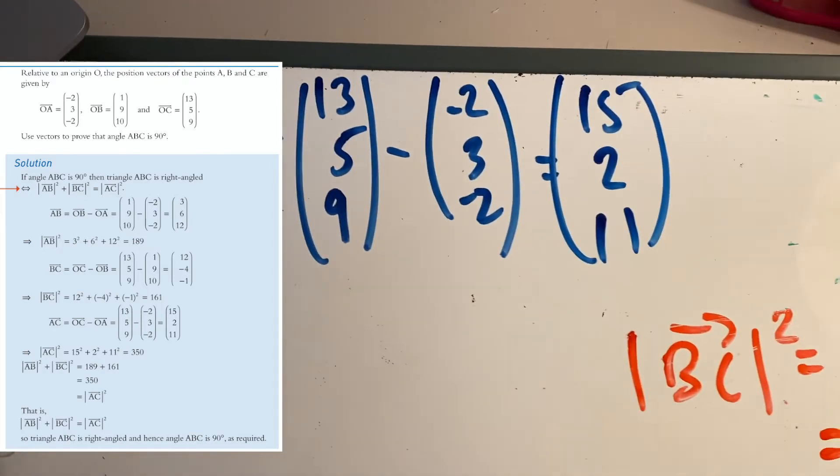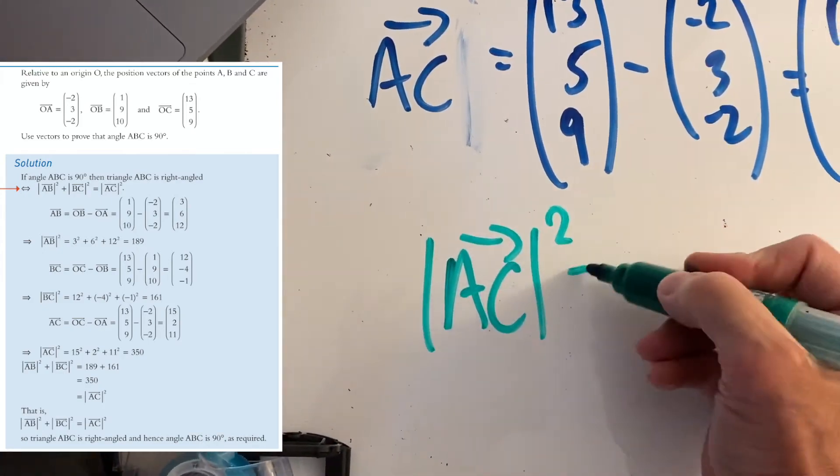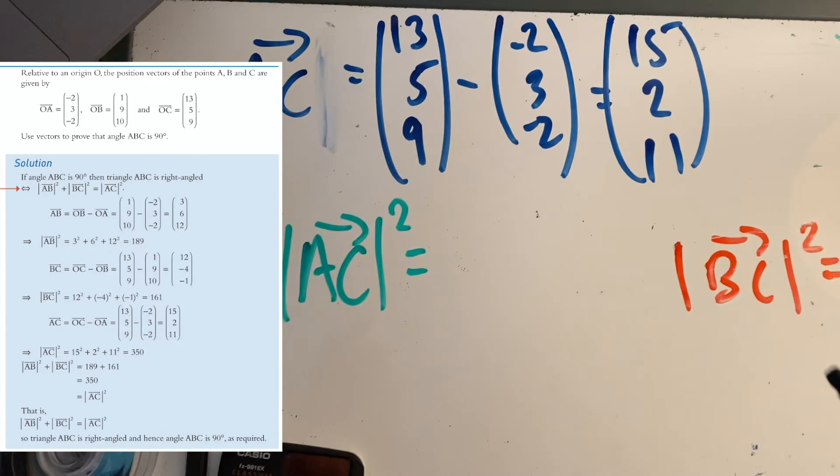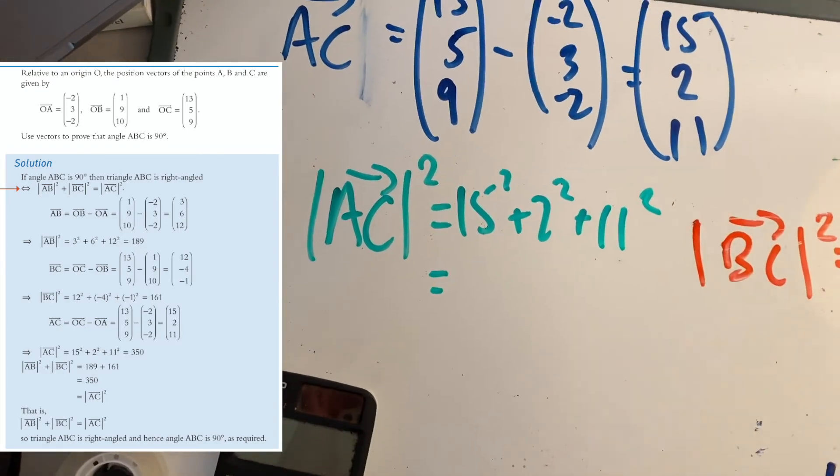Big numbers. Let's look at the magnitude—what's the length of this? Let's square that. It's going to be 15² + 2² + 11². If you did all of that, you come out with 350.